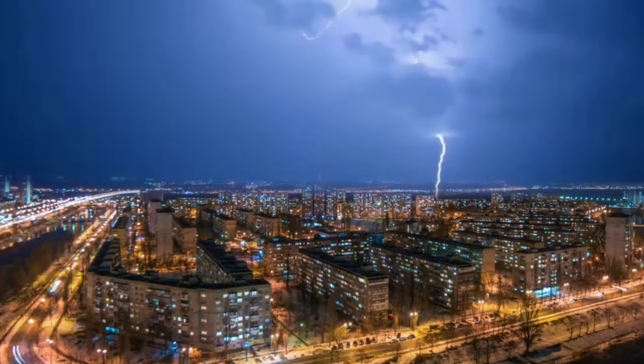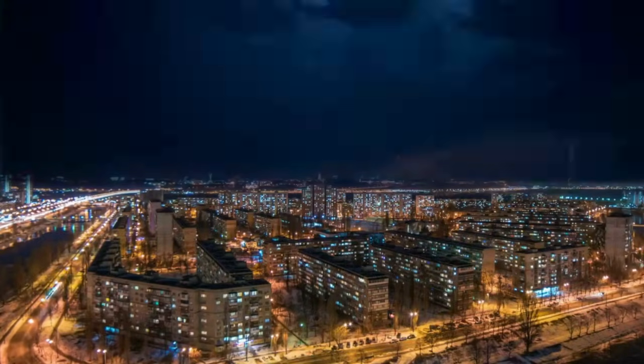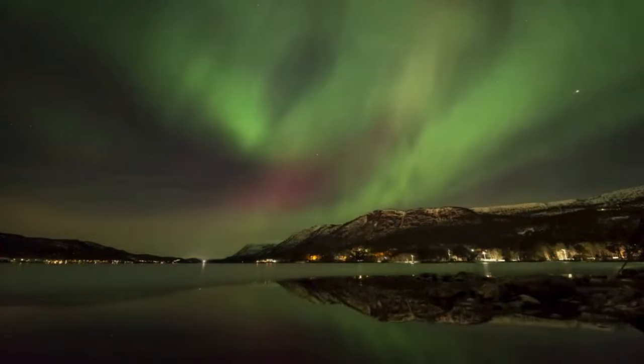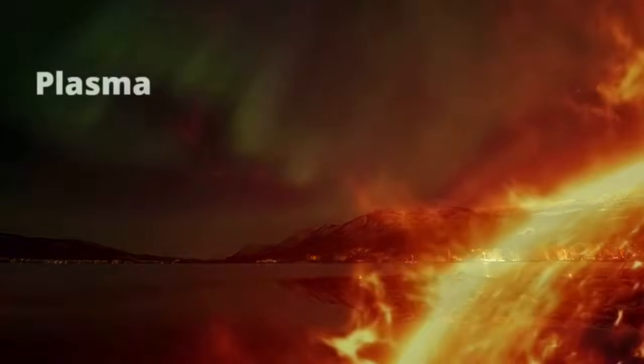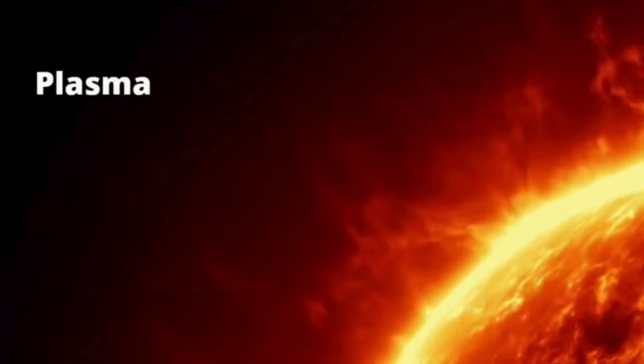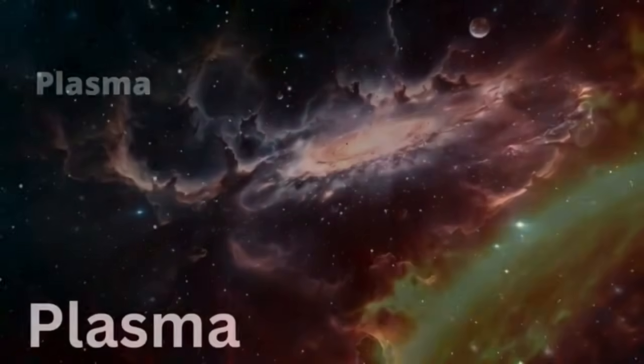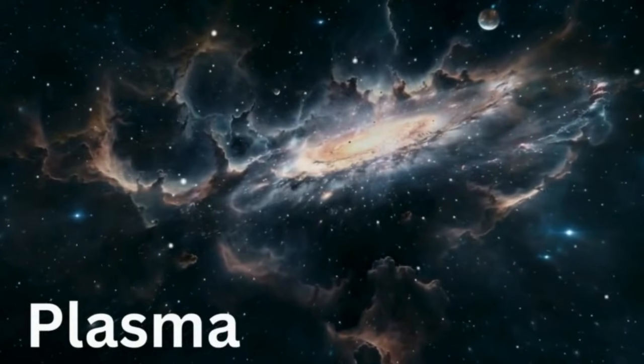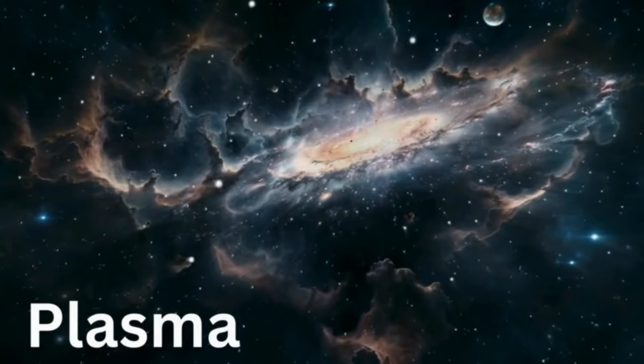Some naturally occurring plasma is lightning and the northern lights. Now plasma may be rare here on earth, but in the universe, the stars including our sun are huge balls of plasma and 99% of the visible part of the universe is plasma.